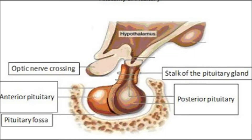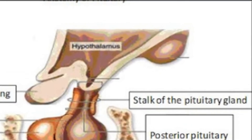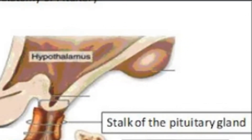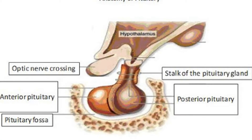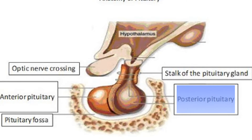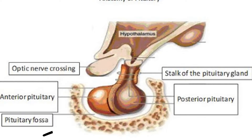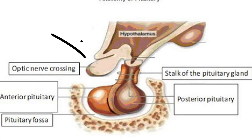A little bit about the anatomy of the pituitary gland. It is connected to the hypothalamus via the pituitary stalk. You have two parts: the anterior pituitary, the adenohypophysis, and the posterior pituitary, the neurohypophysis. It lies within the pituitary fossa in the sella turcica, very close to the sinuses — the sphenoid and the cavernous sinuses — and also to the optic chiasm. When there is a mass and it enlarges, it can compress these structures and cause symptoms.